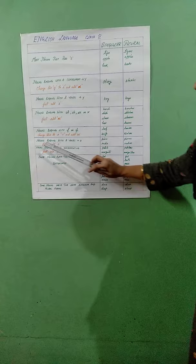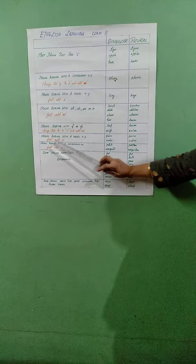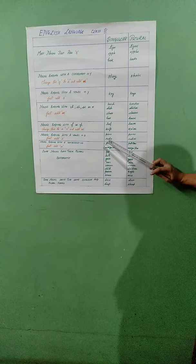The next rule: nouns ending with a vowel and having an O at the end. These words can be converted by simply adding S to it. Like piano and radio — these will be pianos and radios.